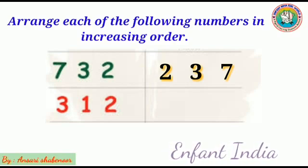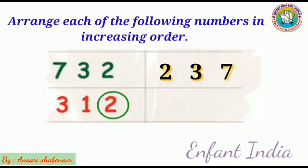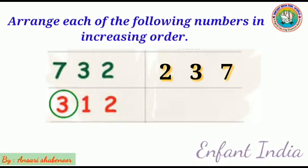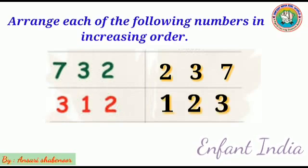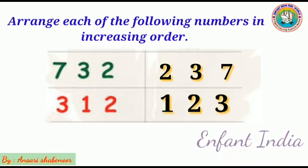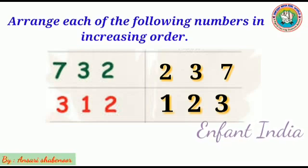Second question. What is the smallest number? 1, then 2. And what is the largest number? 3. So the order is 1, 2, 3. Increasing order means small to big.